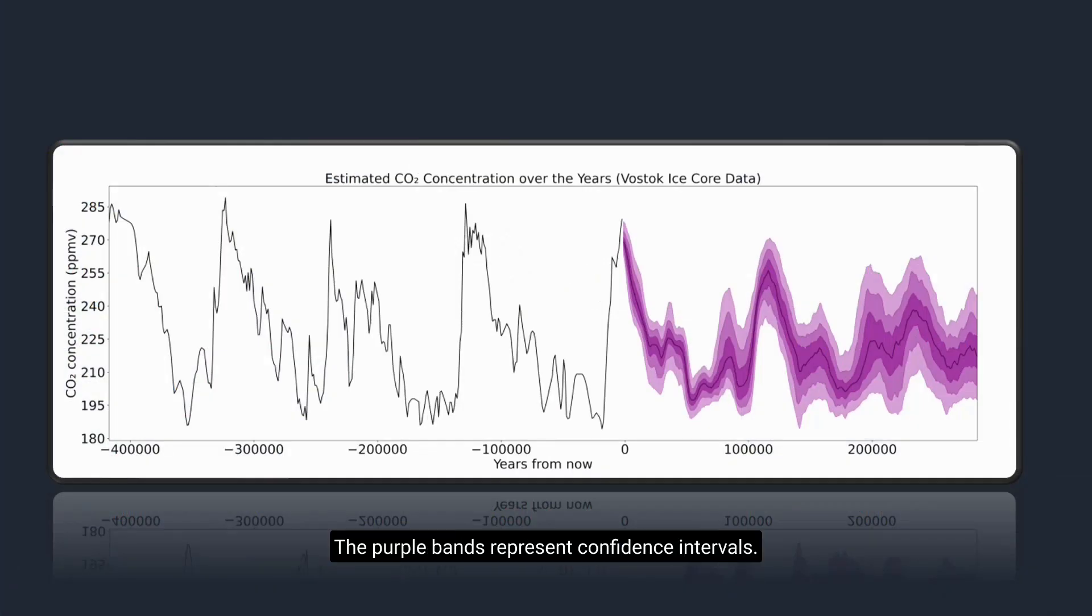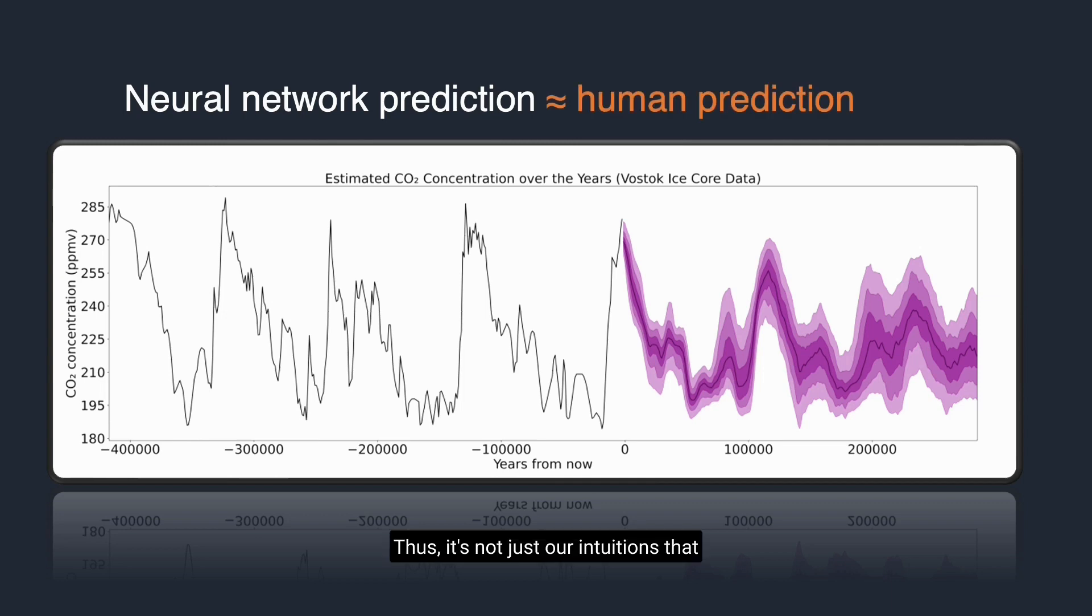Here's what we found. The purple bands represent confidence intervals. Thus, it's not just our intuitions that tell us that these cycles continue.